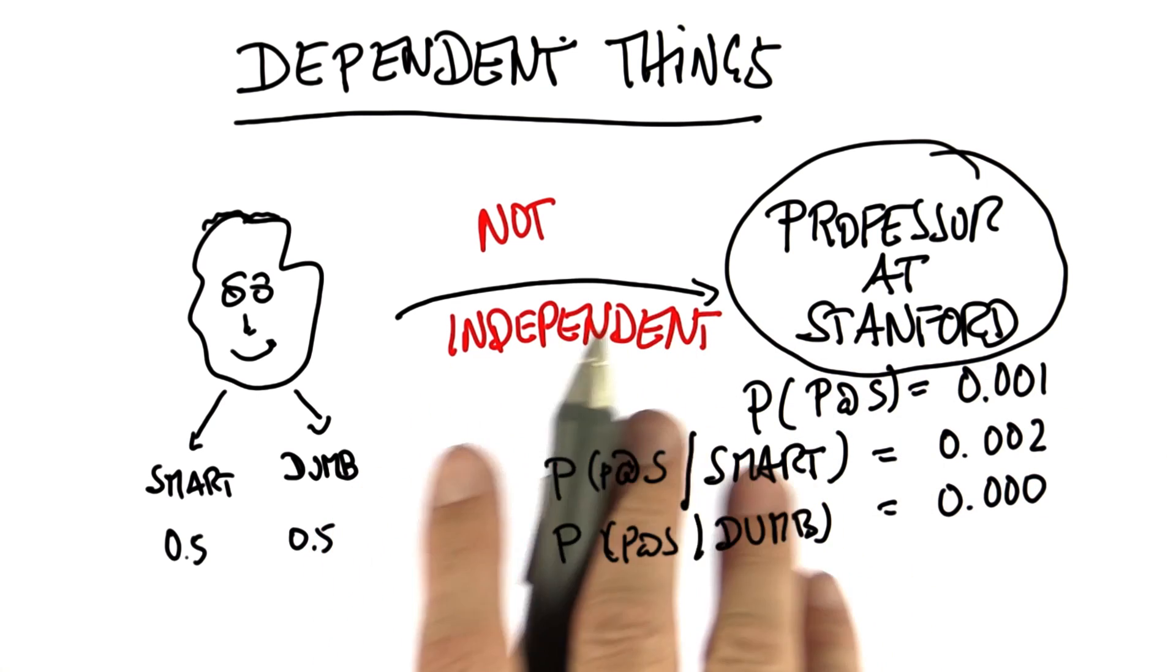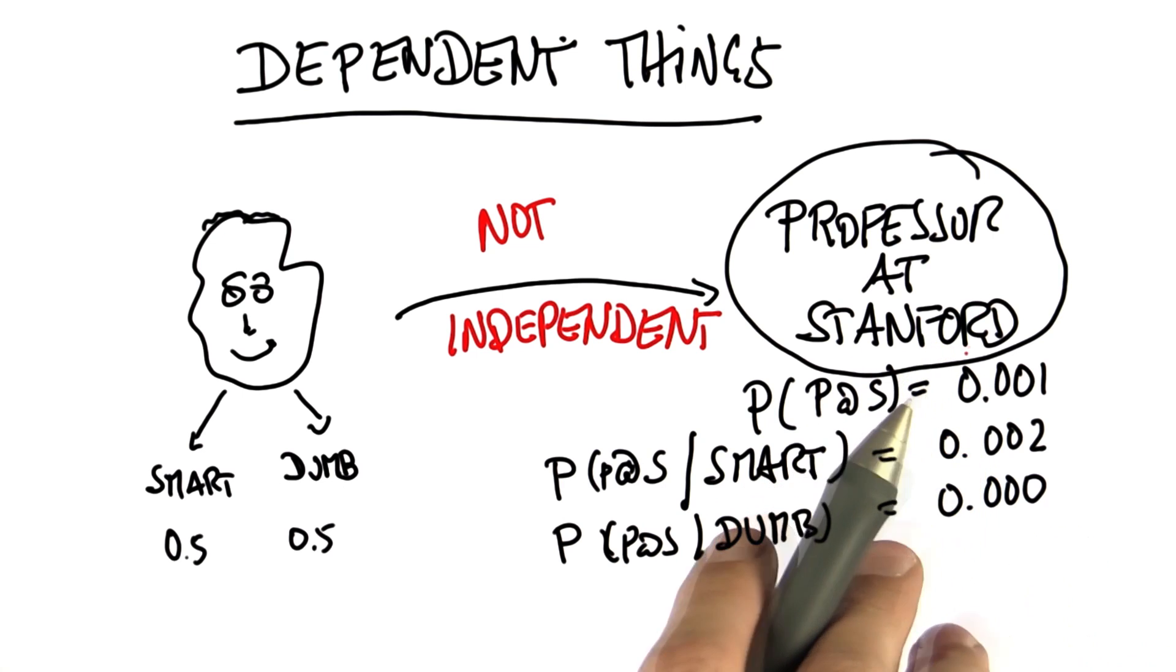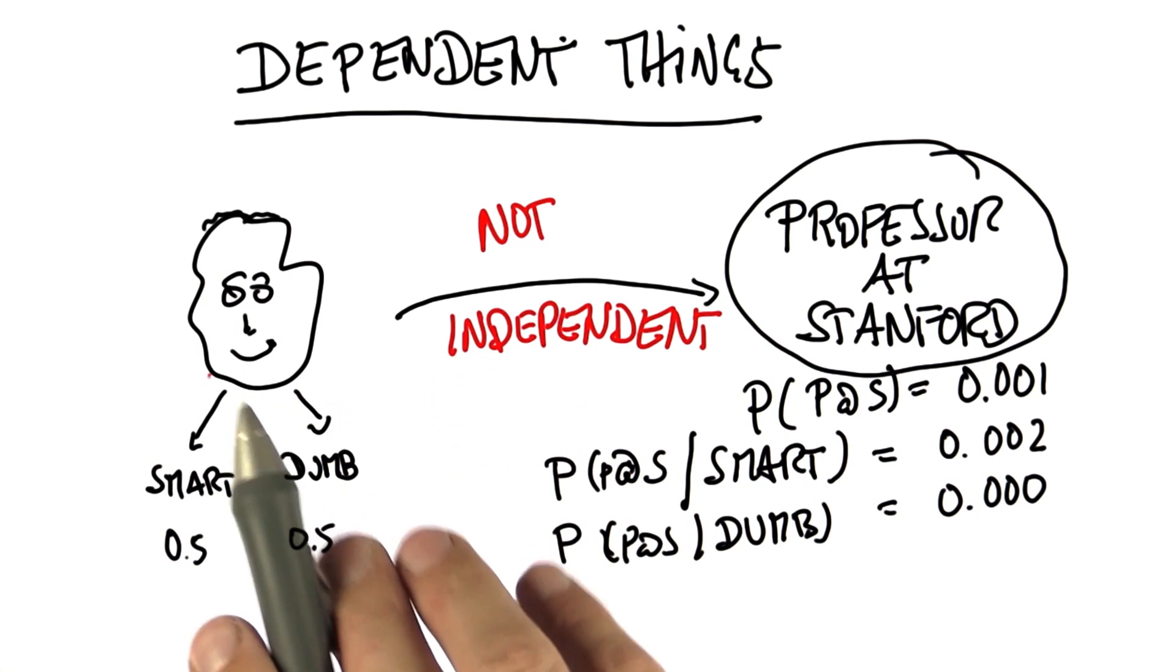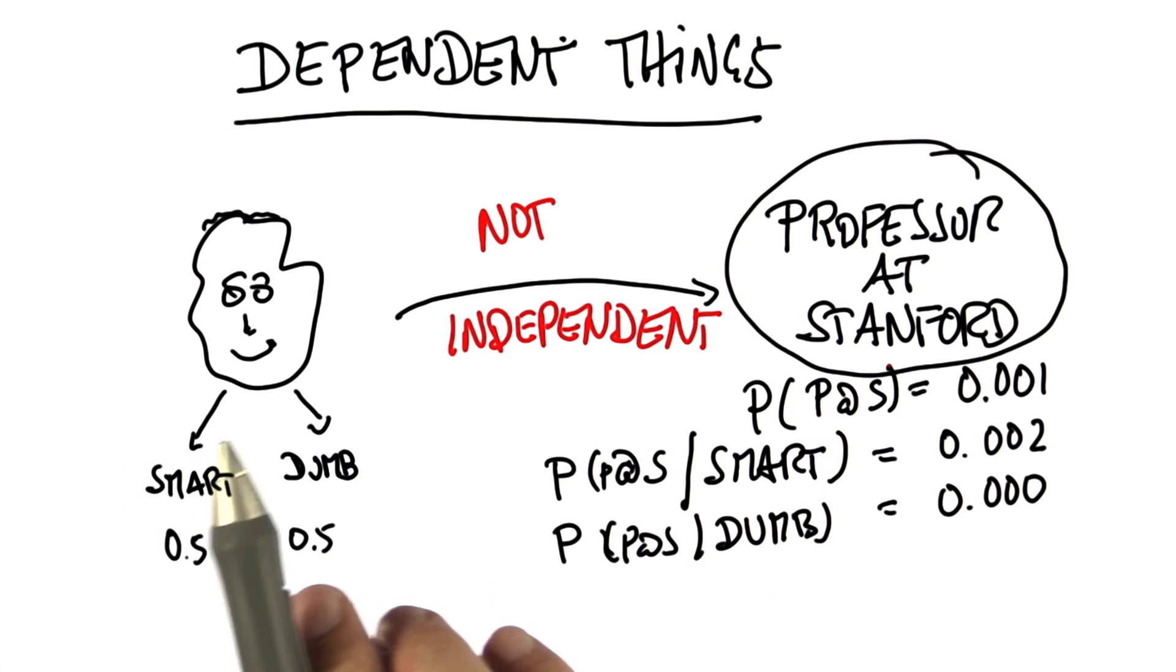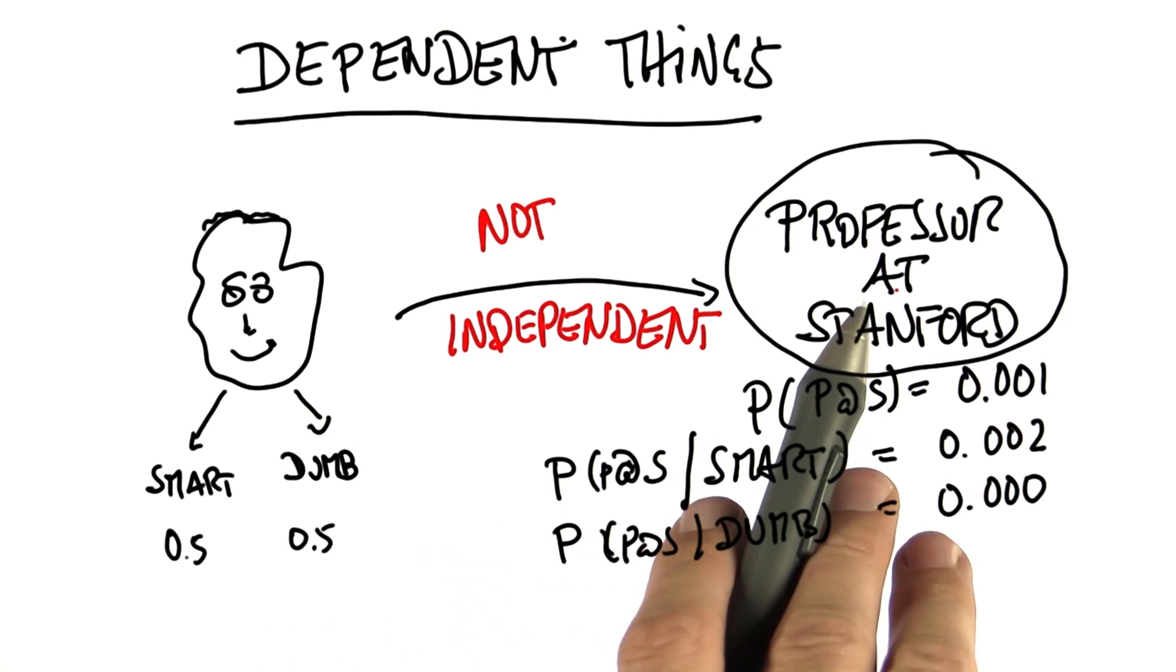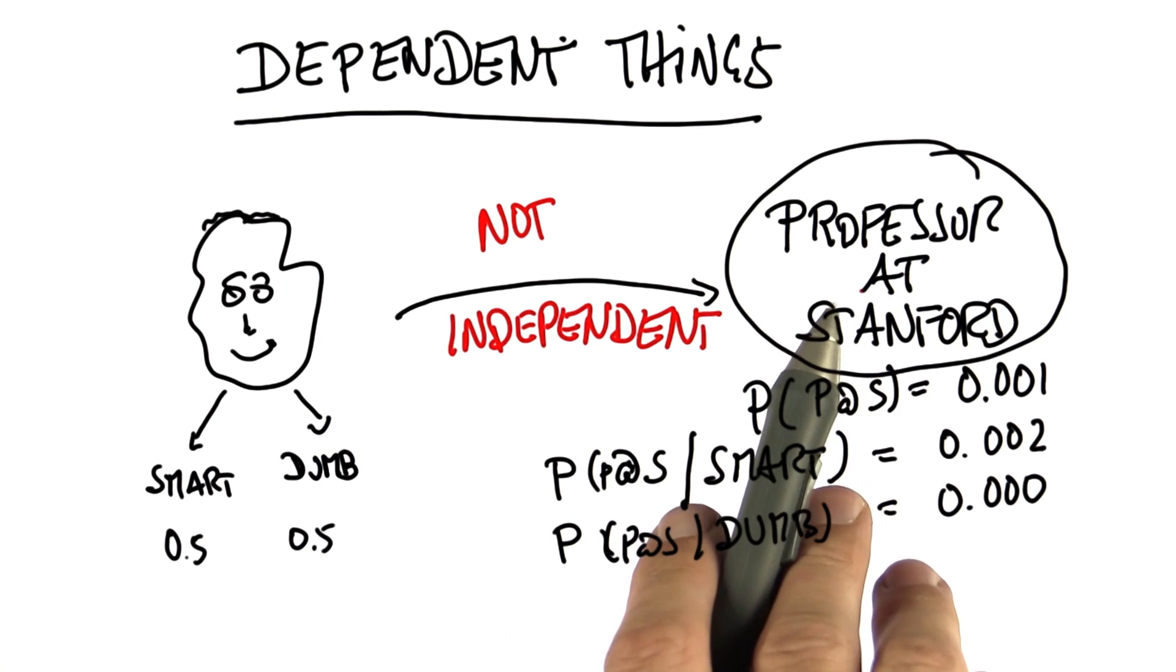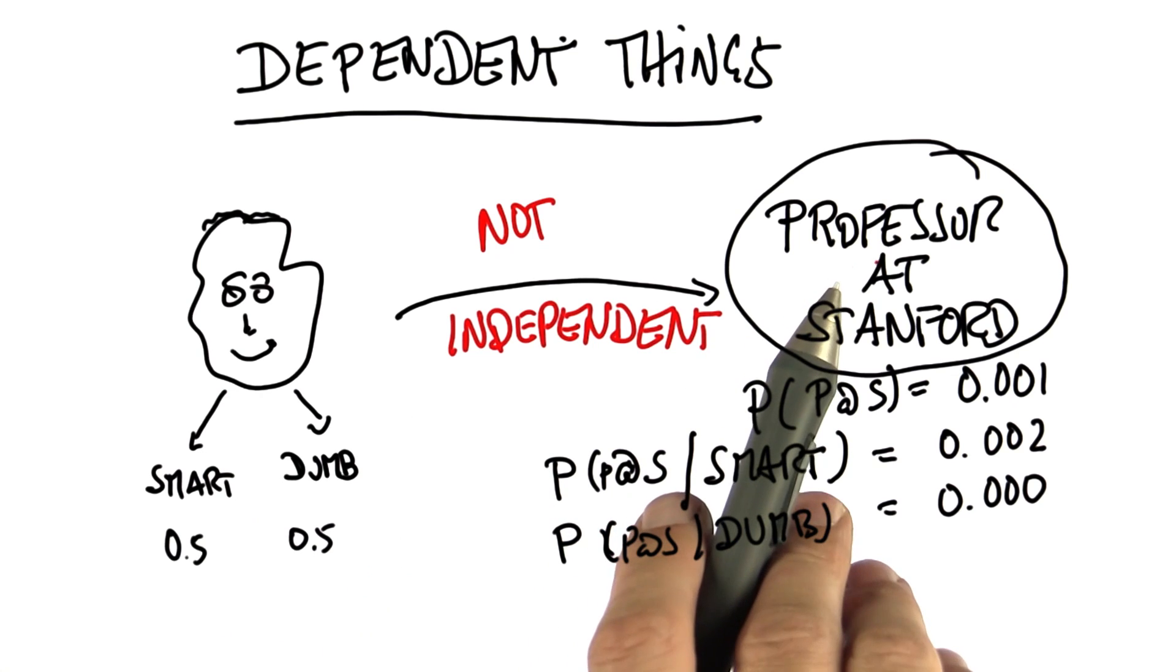So whereas in our last unit, we assumed that the coin flips were independent, that is the outcome of the first didn't affect the outcome of the second, from now on, we're going to study the more interesting case where the outcome of the first does impact the outcome of the second. And to do so, we need to introduce more variables to express these cases.